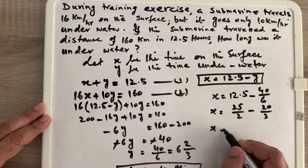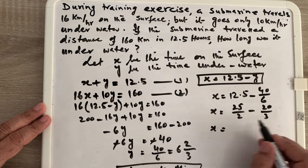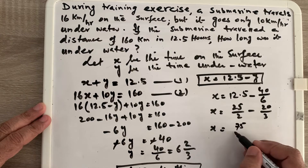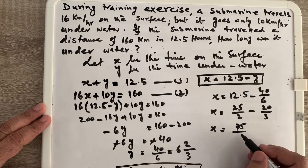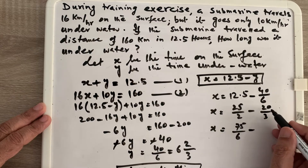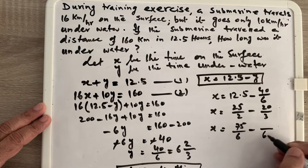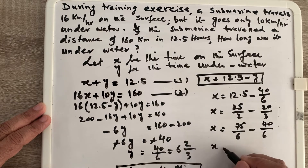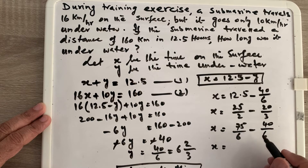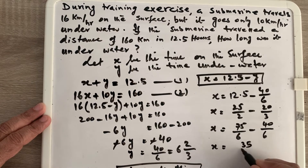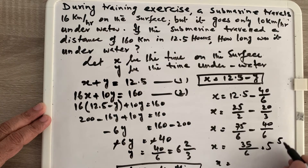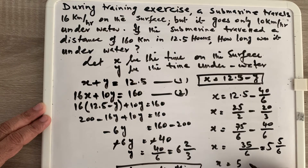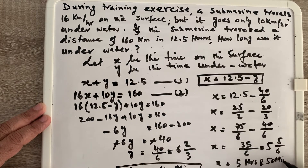Subtracting the numerators: 75 − 40 = 35, so x = 35/6. As a mixed number that is 5 and five-sixths, which converts to 5 hours and 50 minutes. This is the time the submarine was on the surface.